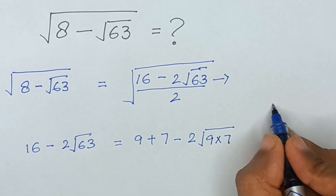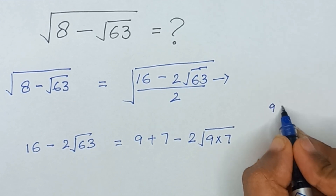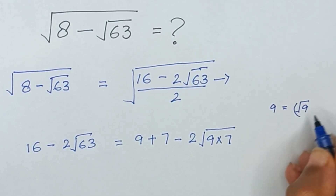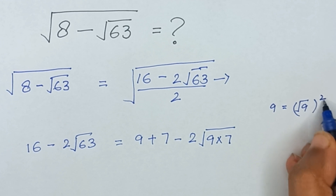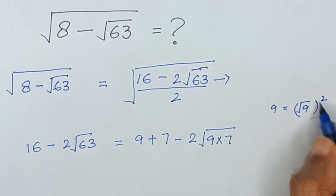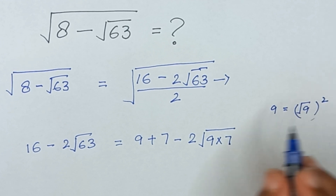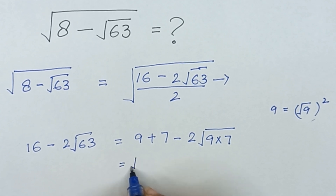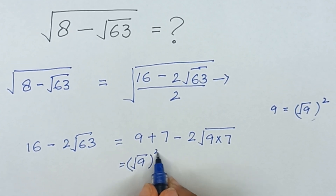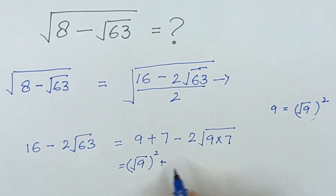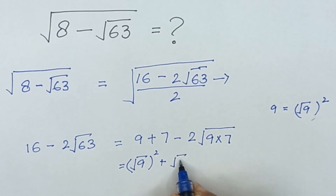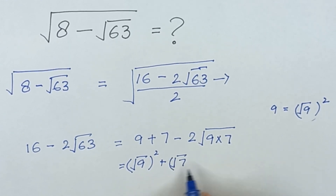So 9 can be written as square root of 9 squared, because the square and square root will cancel out and it will again become 9. So we can write this 9 as (√9)², and similarly we can write 7 as (√7)².